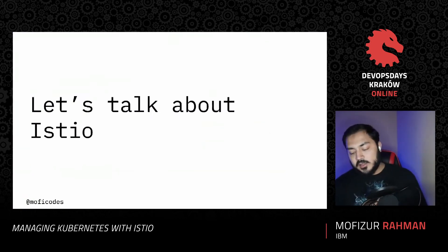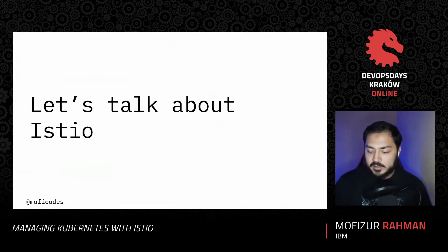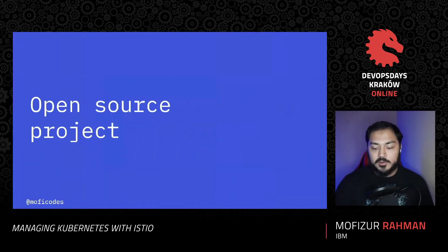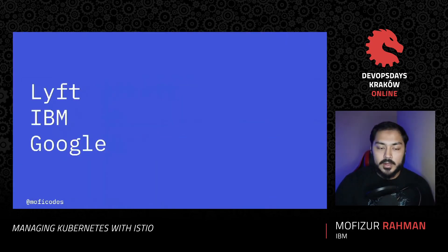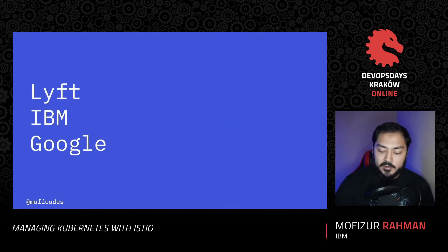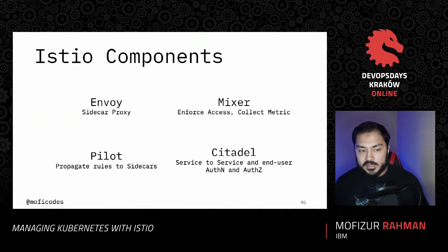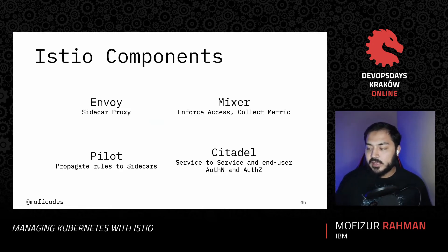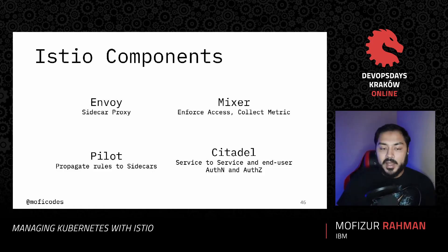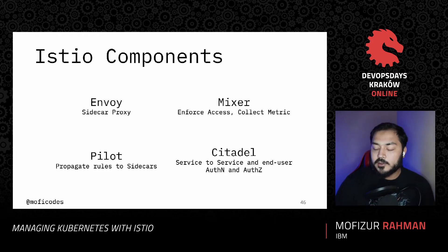Istio is one of the service meshes out there and one of the first to come out. It's an open-source project from a collaboration between Lyft, Google, and IBM. It started from Matt Klein open-sourcing the Envoy proxy, and Istio uses Envoy proxy underneath. Istio has four main components: the Envoy sidecar proxy, Mixer which handles enforcement of access and collecting metrics, Pilot which propagates rules to sidecars, and Citadel which handles security.